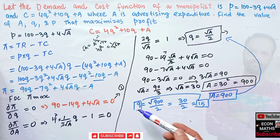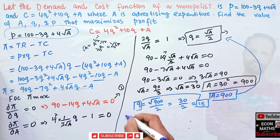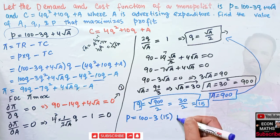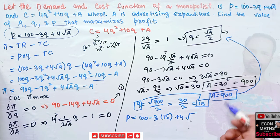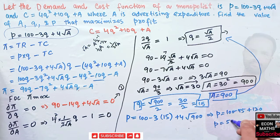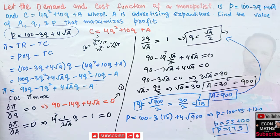To find the profit maximizing price, substitute Q = 15 and A = 900 into the inverse demand function: P = 100 − 3(15) + 4√900 = 100 − 45 + 4(30) = 100 − 45 + 120 = 175. So the profit maximizing level of price is P = 175, the profit maximizing advertising expenditure is A = 900, and the profit maximizing output is Q = 15.